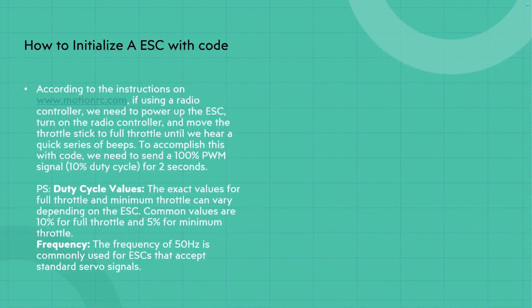So how we're actually going to be doing this with code. According to the instructions from motionRC.com, if using a radio controller, we need to power up the ESC, turn on the radio controller and move the throttle stick to full throttle until we hear a quick series of beeps. To accomplish this with code, we will need to send a 100% PWM signal or 10% duty cycle for two seconds.